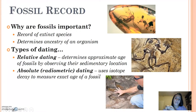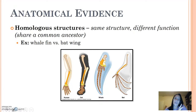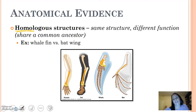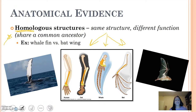When we talk about evidence, there are three different anatomical evidences we're going to focus on. First being homologous. From the genetics unit, remember homo means same. So homologous structures are the same structure — in this case bone structure — but they have different functions. This also means that they share a common ancestor. Our example here is a whale fin and a bat wing; they have the same bone structures, with different colors corresponding to each other in the picture, but they use them for drastically different things.